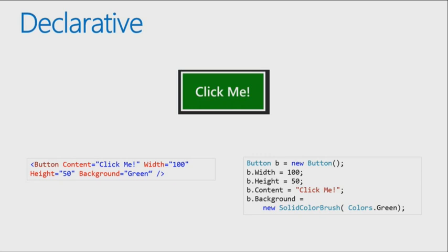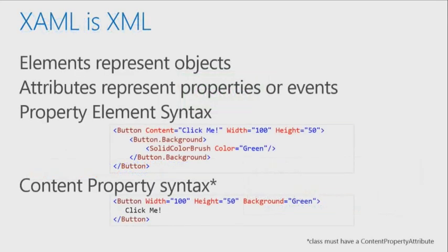XAML has many type converters which are very powerful — simply typing 'green' will trigger conversions when the XAML is parsed. That's pretty much instantaneous so you don't have a big impact, and it's much nicer to write. In a minute we'll get to the tools and you'll see we have IntelliSense, so you'll be very effective at coding in XAML. Let's start with the basics: XAML is XML. All XML elements will be representing an object.